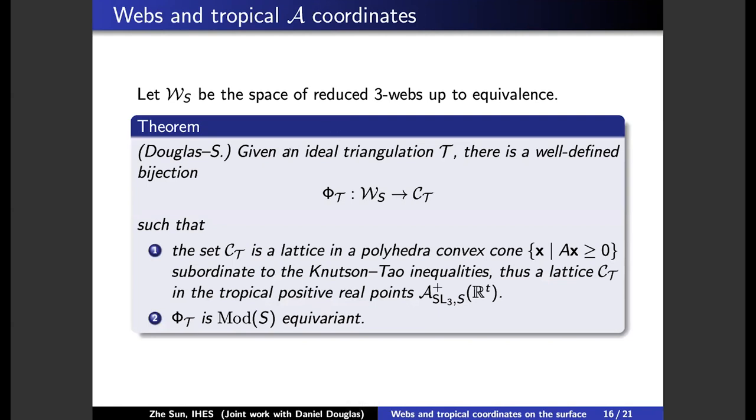And we show that given an ideal triangulation, there is a well-defined bijection from these webs to a polyhedral convex cone.